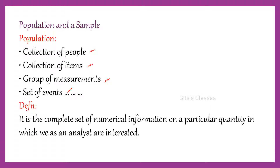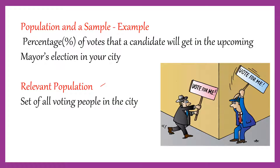For example, if you wish to find out the percentage of votes that a particular candidate gets in the upcoming mayor's election in your city, then the population of interest will be the set of all voting people in your city. If you wish to make the same inference for a national election, then the population of interest would be the set of all voting people in the entire country.